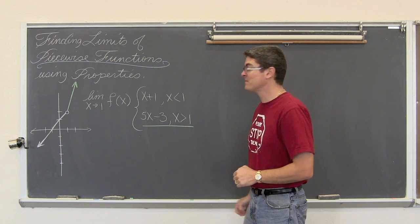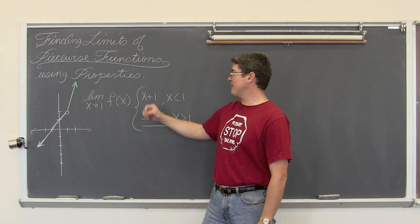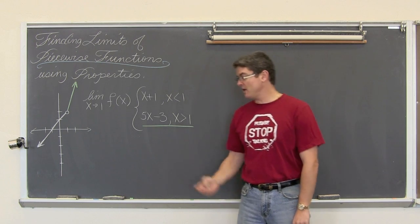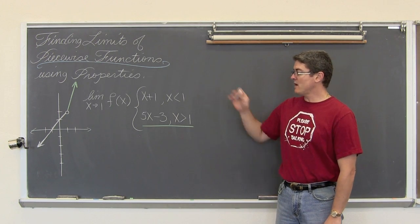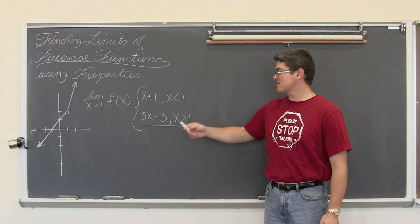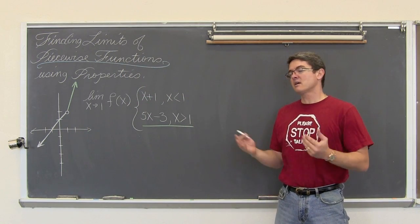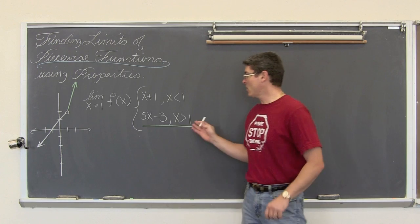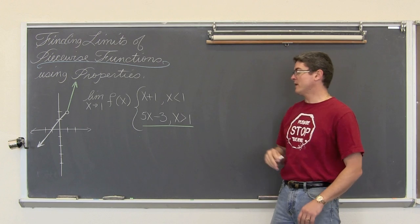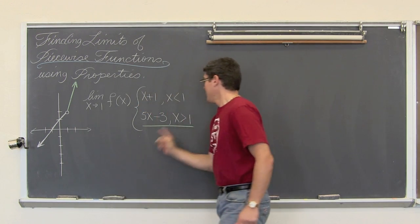Here is our first example. We want to find the limit as x approaches one of f of x, where f of x is defined as x plus one where x is less than one, and five x minus three where x is greater than one. If my piecewise function is defined like this with x being defined where x is less than one and greater than one, we would have a function that consists of basically two separate lines coming together to make the single piecewise function.